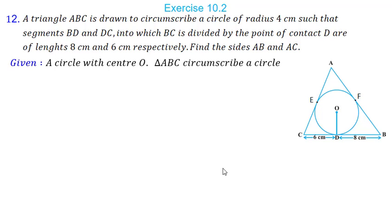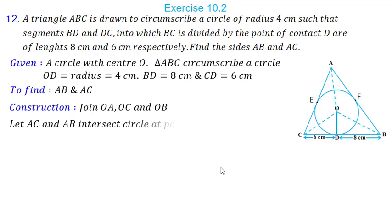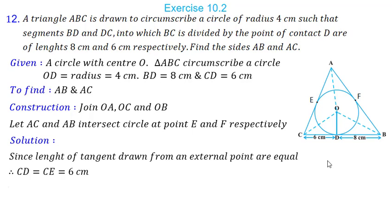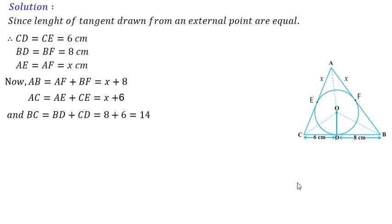We have a circle with center O and triangle ABC circumscribing the circle. OD = 4, BD = 8, CD = 6 cm. We have to find the value of AB and AC. In construction, we join OA, OB and OC. AC and AB touch the circle at points E and F. Since the lengths of tangents drawn from an external point are equal: CD = CE = 6, BD = BF = 8, and AE = AF = X. So AB = AF + BF = X + 8, AC = AE + CE = X + 6, and BC = BD + CD = 8 + 6 = 14.